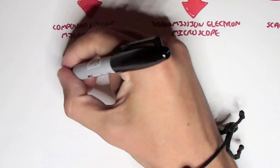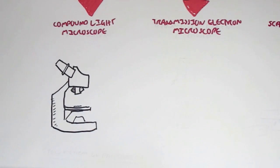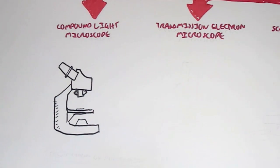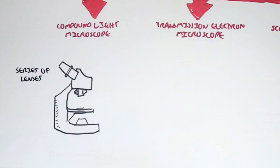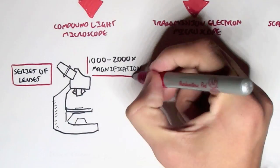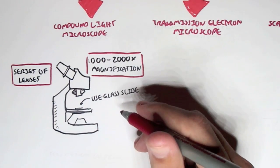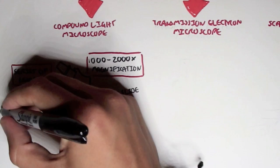What are the differences? Well, the Compound Light Microscope is really just the basic. And we are able to see microorganisms through a series of lenses. And they can actually magnify about 1000 to 2000 times magnification. And we usually use a glass slide to view these microorganisms.